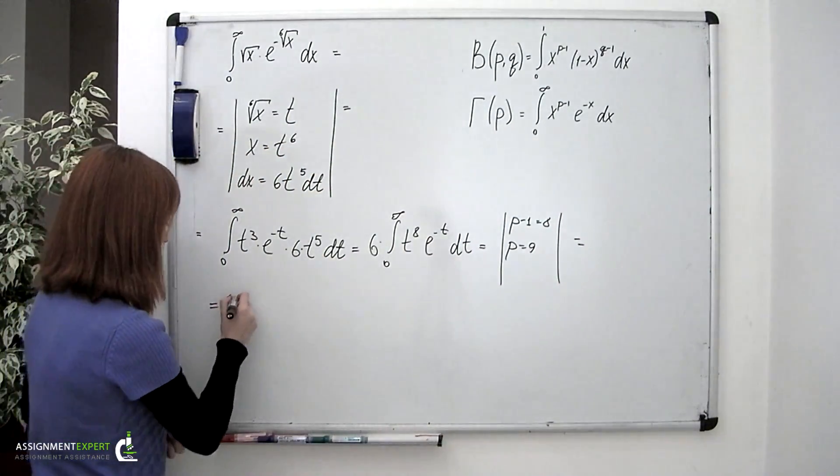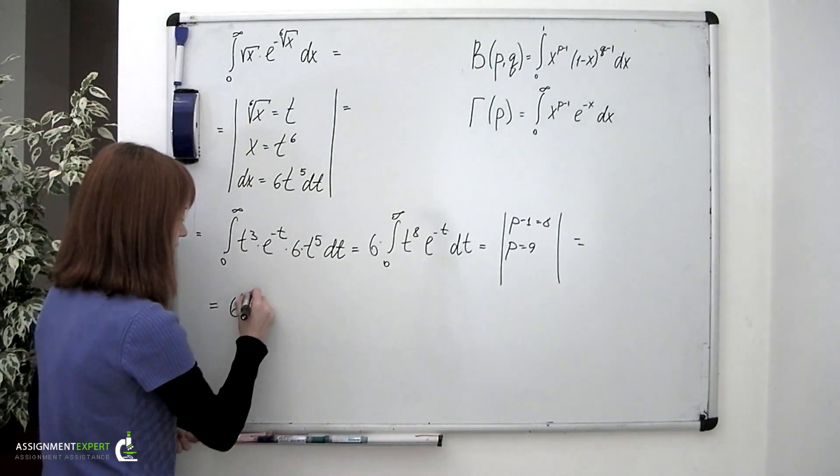And we obtain 6 multiplied by gamma of 9.